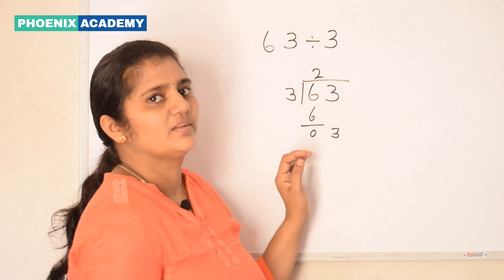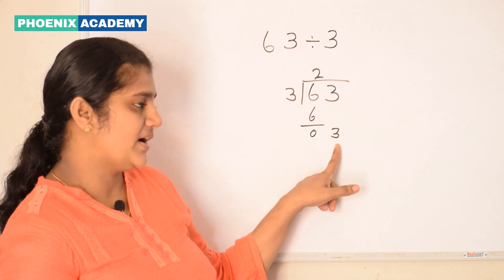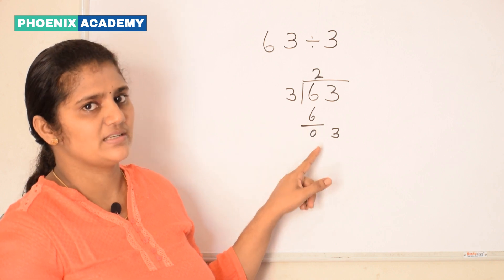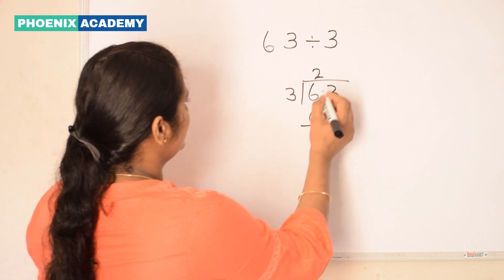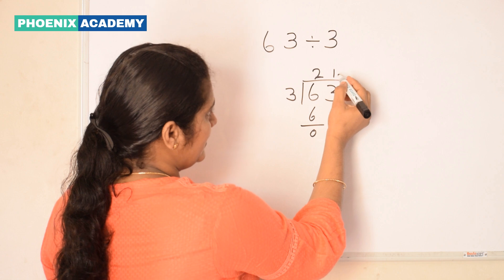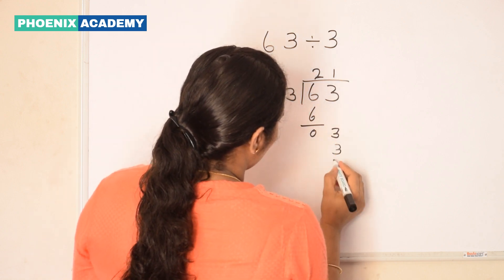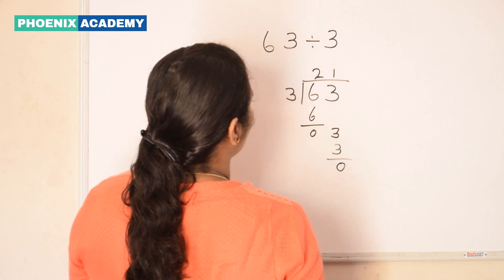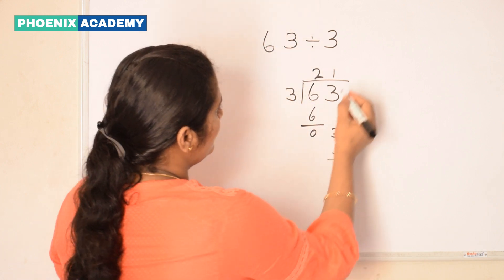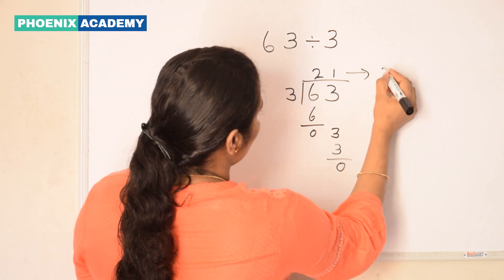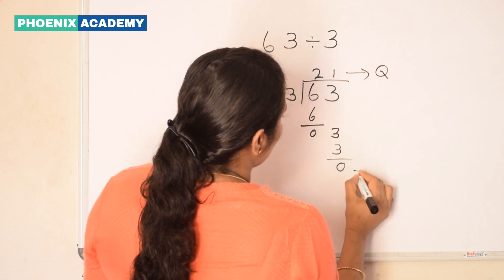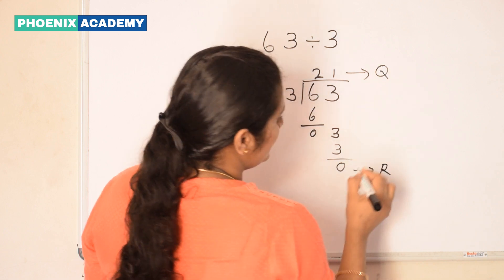3 divided by 3. When a number is divided by the same number, the answer is always 1. So 1 we write at quotient's place and 3 we write below the dividend and subtract. Here we got 21 as the quotient, 0 as the remainder.